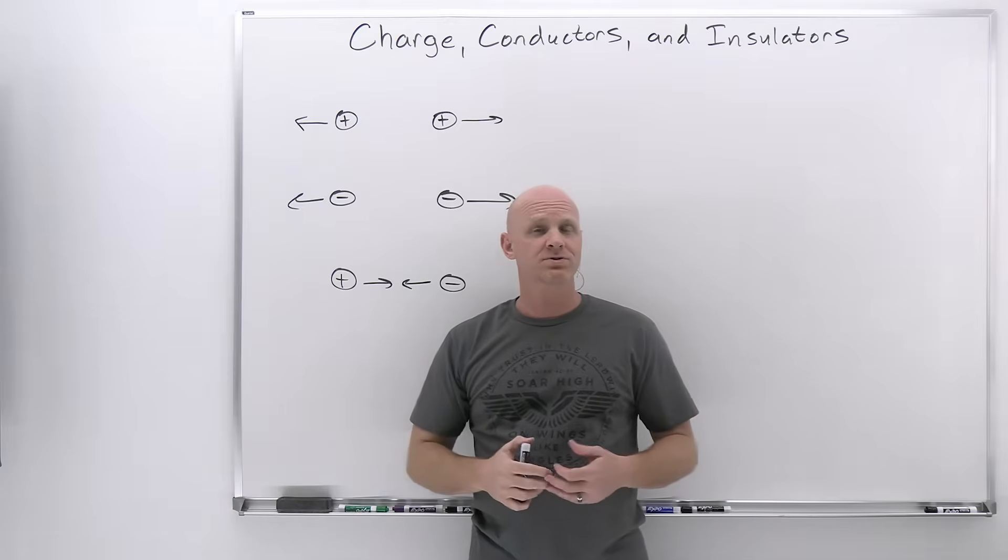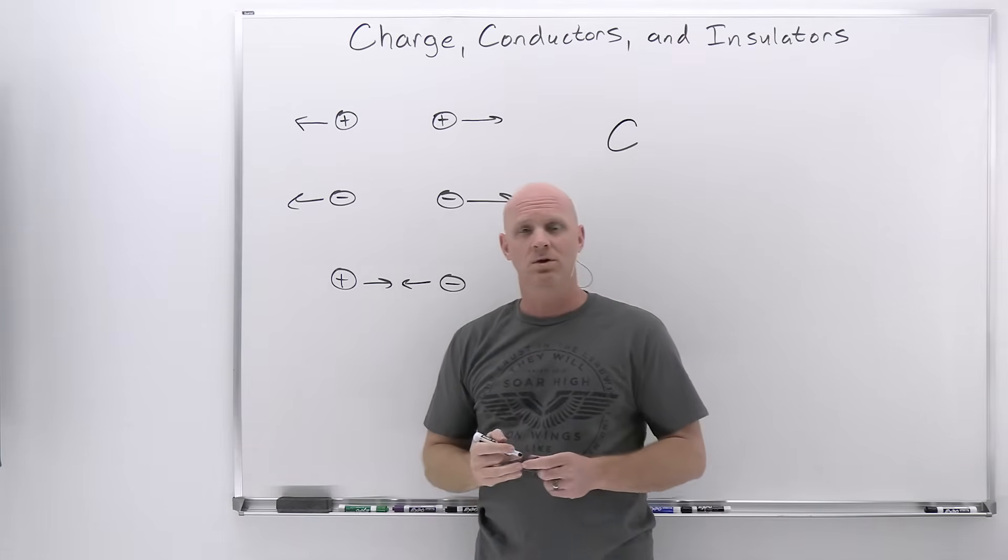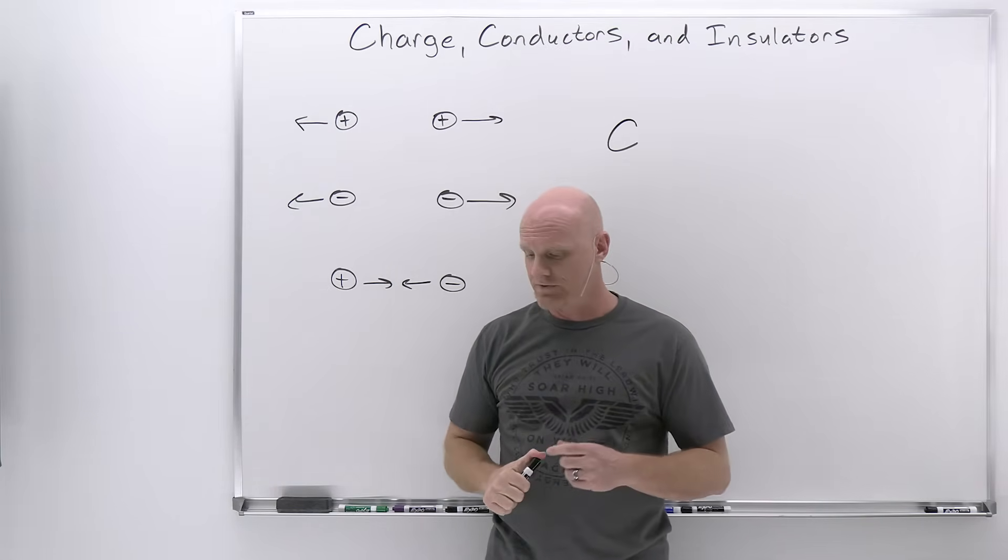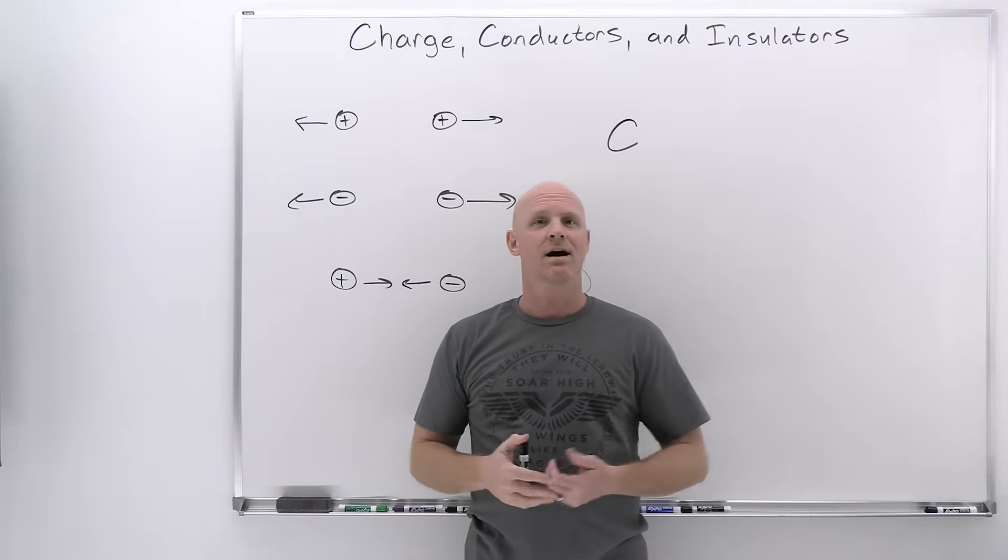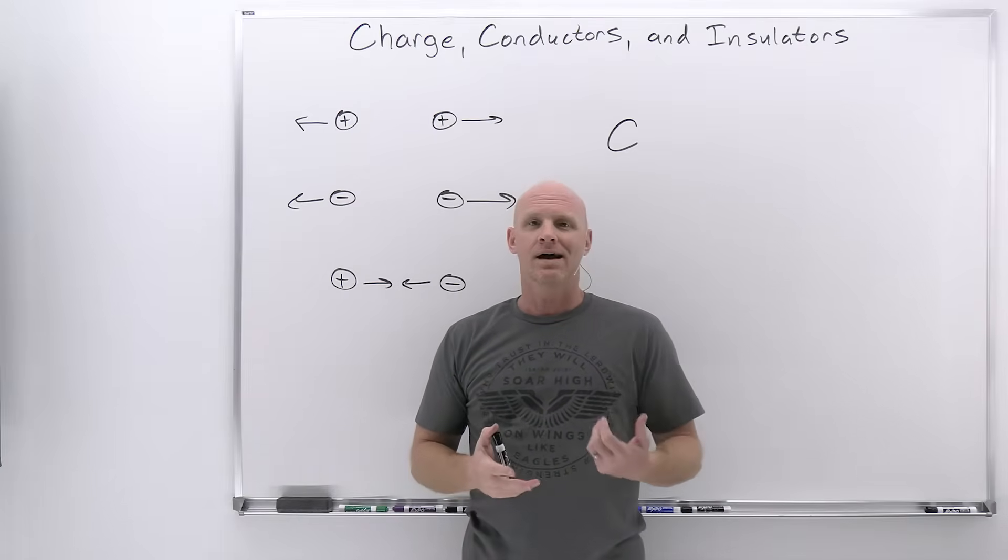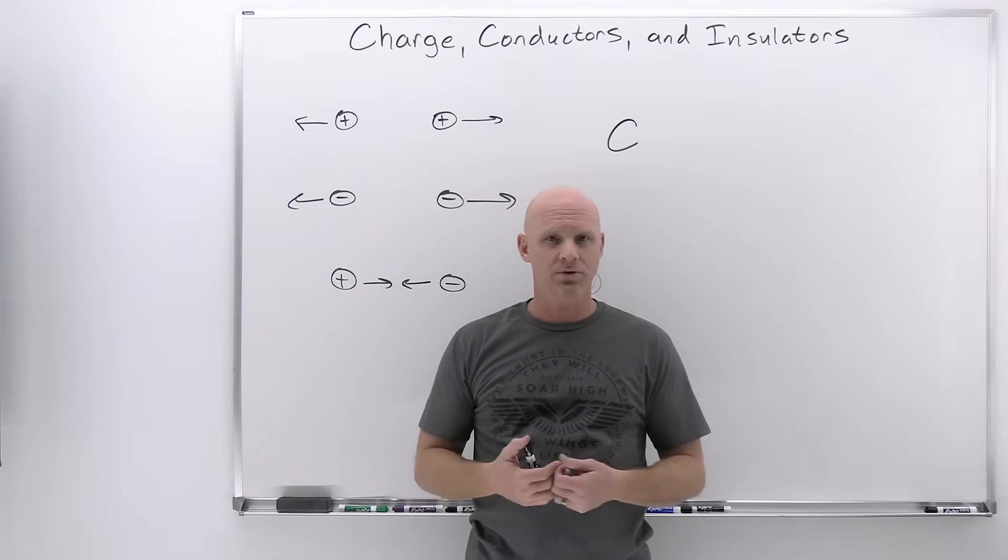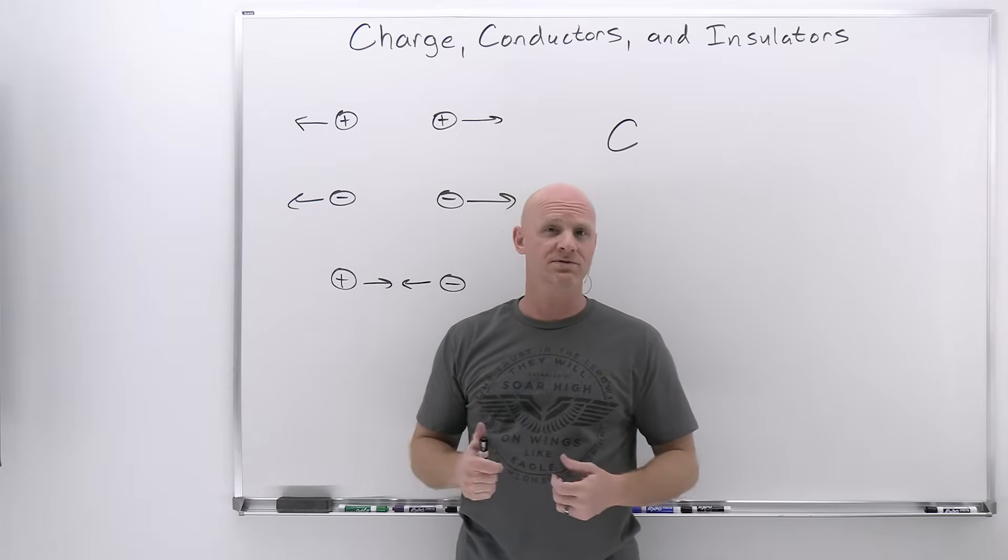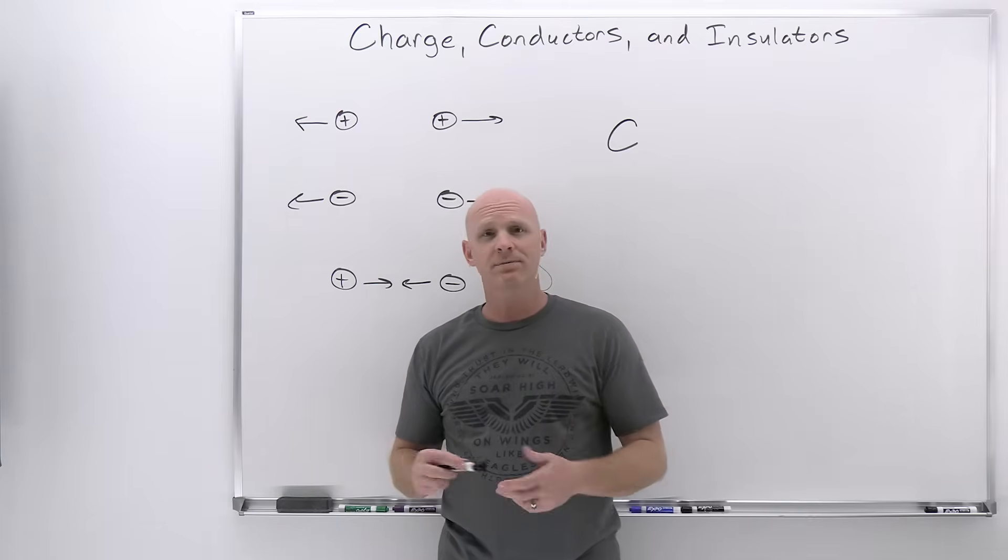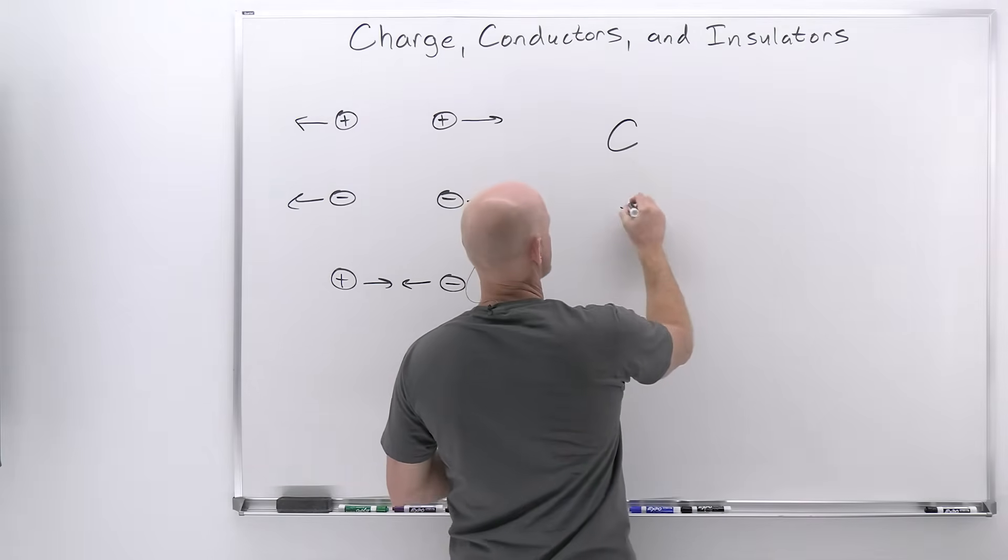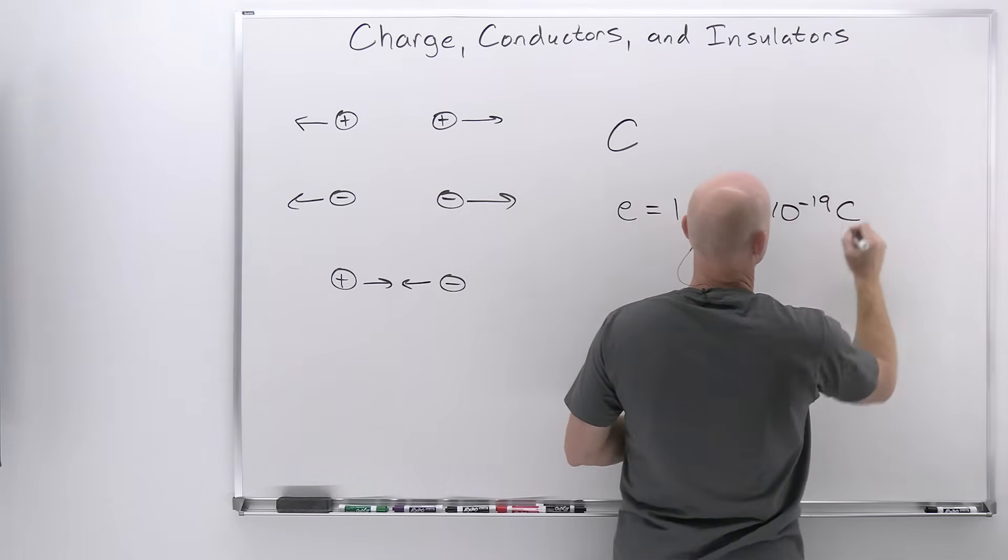The SI unit is the coulomb, abbreviated with a C. Coulomb was one of the early guys to study electric forces and fields. The coulomb is a phenomenal amount of charge, like the amount you might find in a lightning bolt. Typically the problems we're going to deal with involve much smaller amounts like microcoulombs, nanocoulombs, and picocoulombs. There's also a fundamental charge, 1.602 times 10 to the negative 19 coulombs.